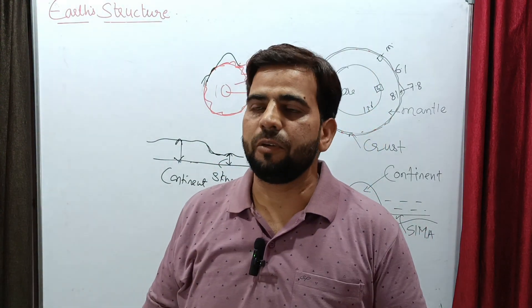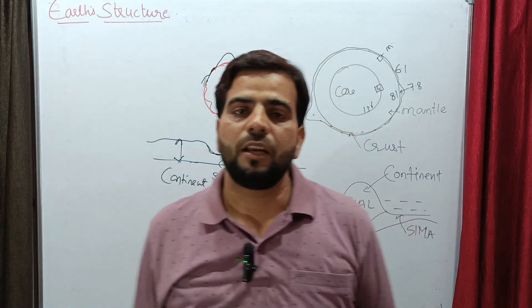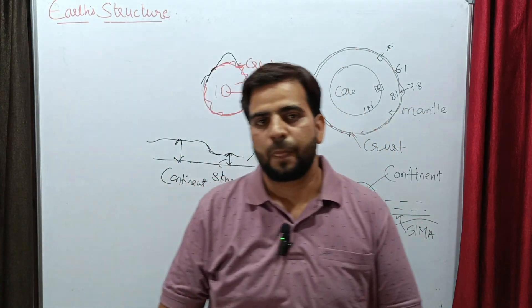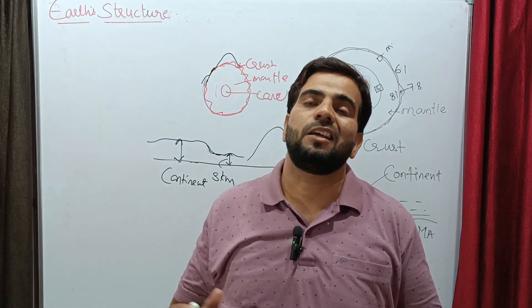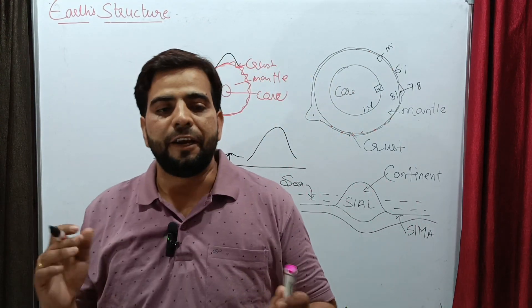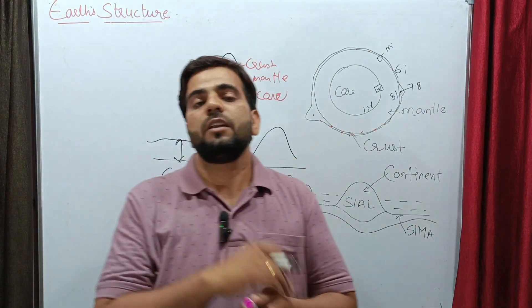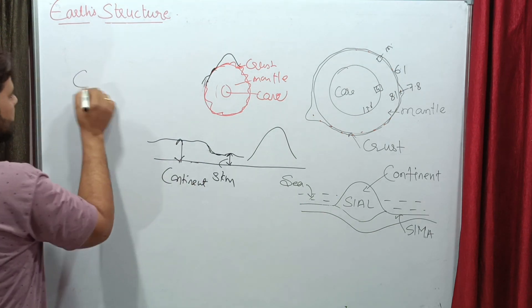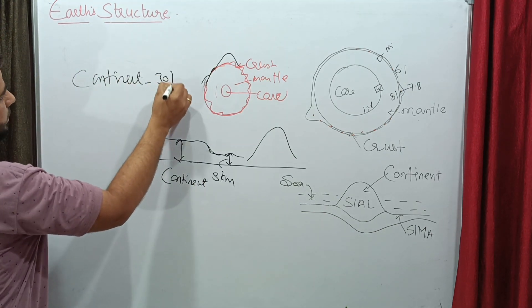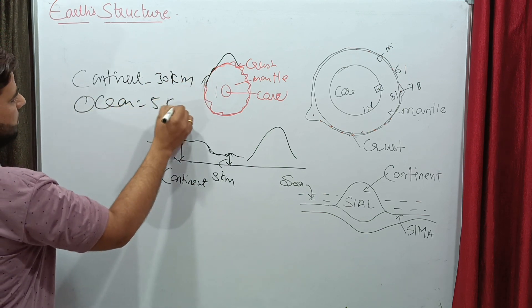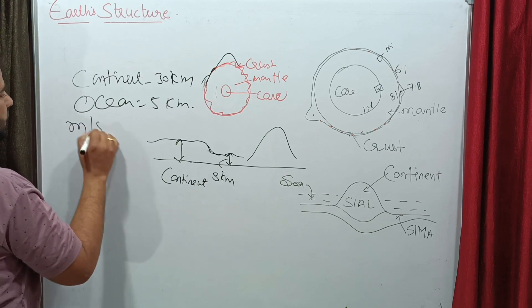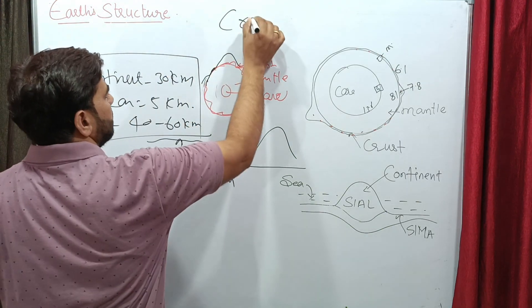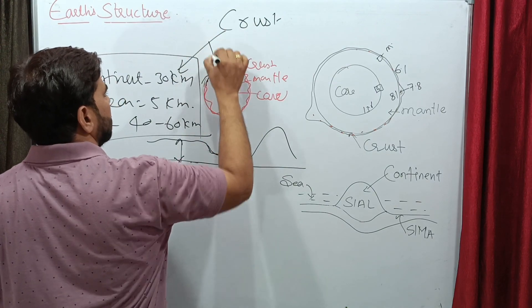Below the oceans, crust thickness is nearly five kilometers. Below mountains, the thickness counts for nearly 40 to 60 kilometers, depending on the height of the mountain. Below the continent it is nearly 30 kilometers. So to summarize: continent is 30 kilometers, ocean is five kilometers, and below mountains it is 40 to 60 kilometers. This is the thickness of the Earth's crust.